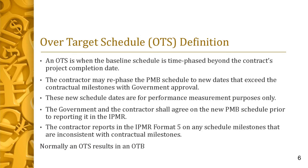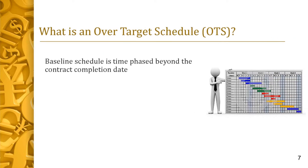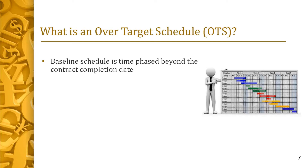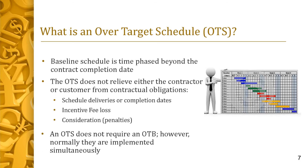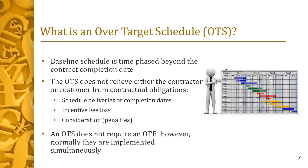While an OTS may be implemented without adding additional budget, normally an OTS also results in an OTB. An OTS is when the baseline schedule is time-phased beyond the project completion date. When the planned completion date for all remaining contract work results in a forecasted date well beyond the contract completion date, an over-target schedule should be considered. The OTS does not relieve either the contractor or customer from contractual obligations such as schedule deliveries, completion dates, incentive fee loss, or penalties. Typically, an increase in schedule will also require an increased budget allocation. Therefore, an OTS and an OTB are normally implemented simultaneously.